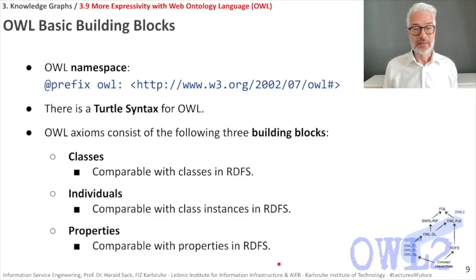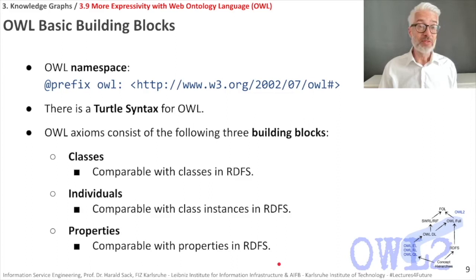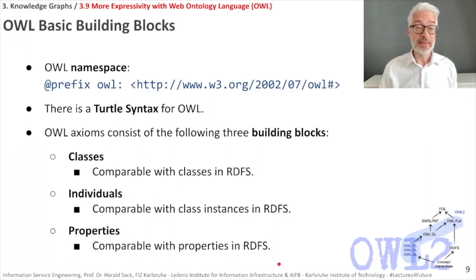Let's start with OWL building blocks. We need a namespace for OWL to abbreviate URIs — the prefix is 'owl:'. There is a Turtle syntax for OWL which makes things easier. The main building blocks of OWL are classes, individuals, and properties — comparable, though not exactly the same, as their counterparts in RDFS.